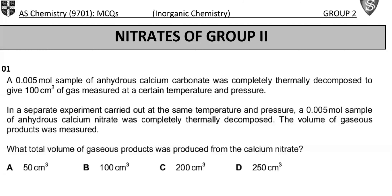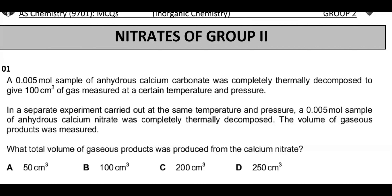Nitrates of group 2, MCQs, question 1. A 0.005 mol sample of anhydrous calcium carbonate was completely thermally decomposed to give 100 cm³ of a gas measured at a certain temperature and pressure. This important part is certain — it does not say RTP.